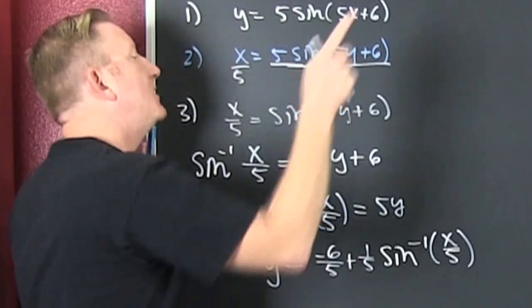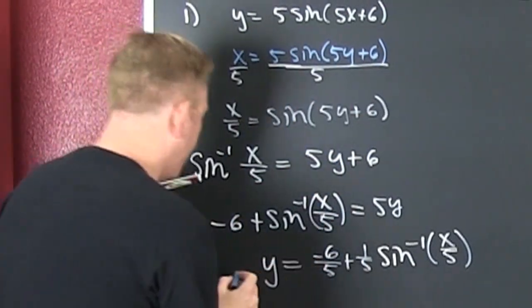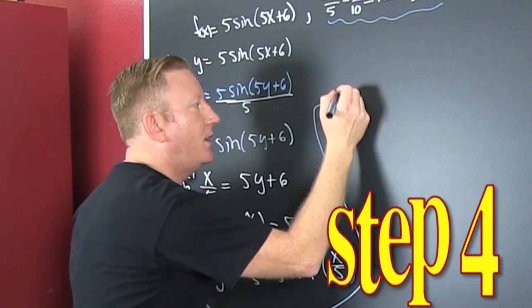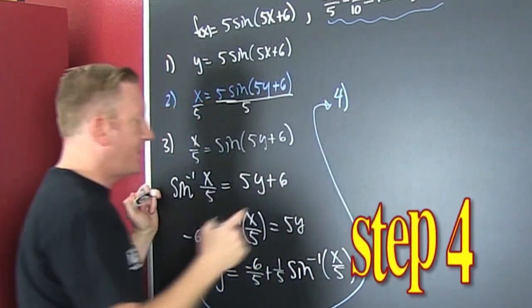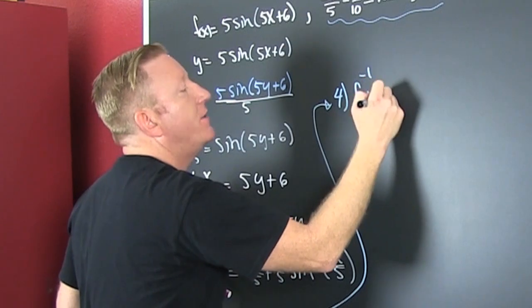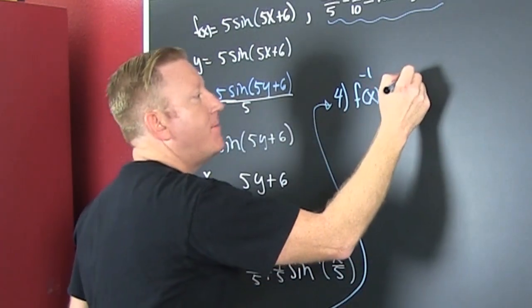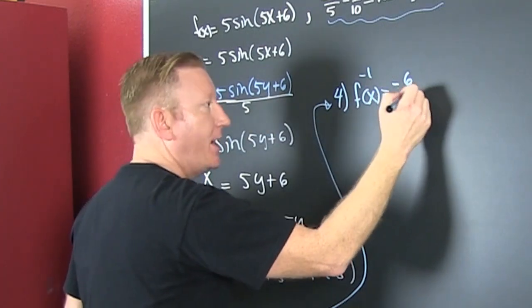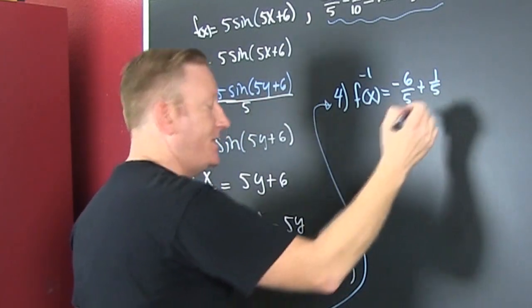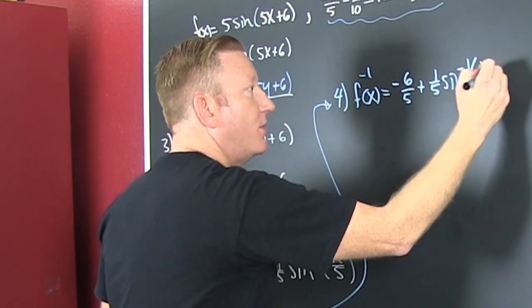Now what? That last step — step four, the step you're going to forget. Replace y with f inverse of x. So f inverse of x equals negative 6 over 5, plus one-fifth times the sine inverse of x over 5.